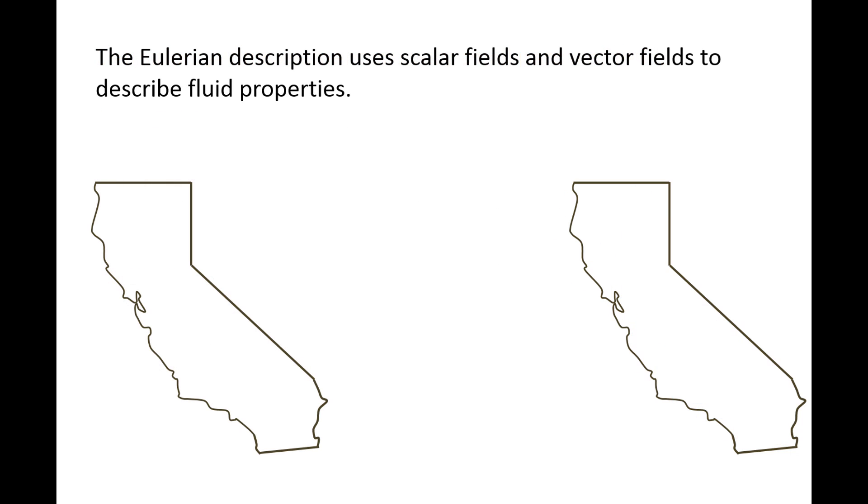The Eulerian description of flow uses scalar fields and vector fields to describe fluid properties. Weather forecasts are reported using the Eulerian viewpoint.